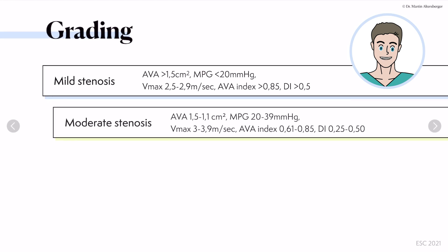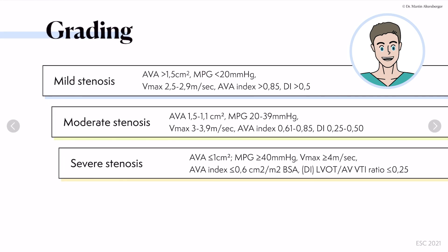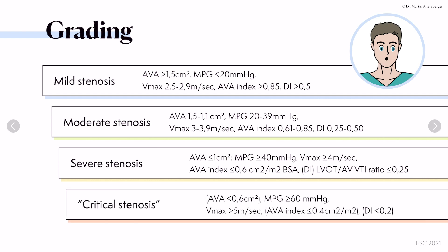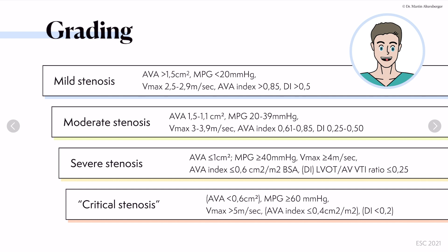Now let's move on to grading. It's very important to grade aortic stenosis because we already know the measurements when it's normal. But what does a severe stenosis actually mean? In case of a mild aortic stenosis, the aortic valve area is larger than 1.5 square centimeters. The mean pressure gradient, calculated with the continuous-wave Doppler signal, is below 20 millimeters of mercury, and the maximum velocity is between 2.5 to 2.9 meters per second.